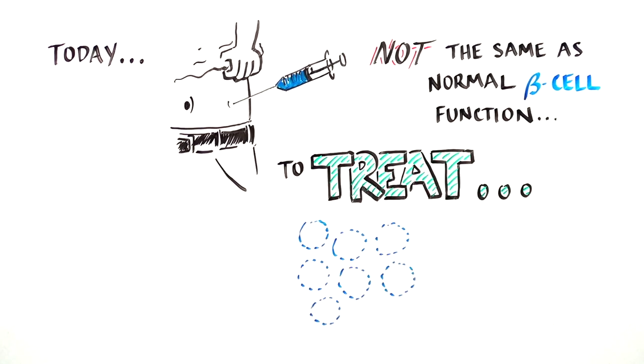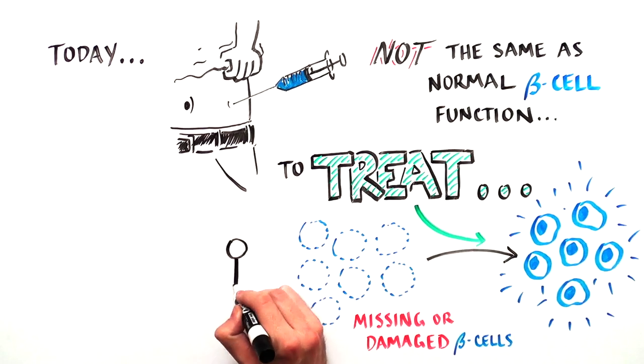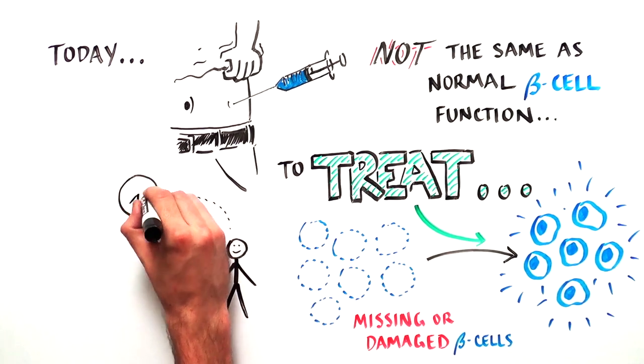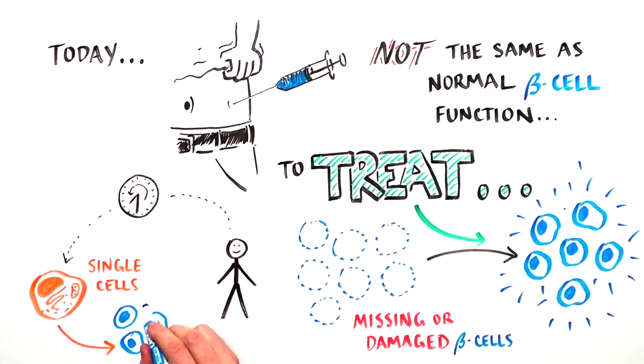To treat diabetes, scientists are trying to replace the missing or dysfunctional beta cells. To do this, they have turned back the clock to the time when we were all single cells to understand how beta cells are naturally produced.